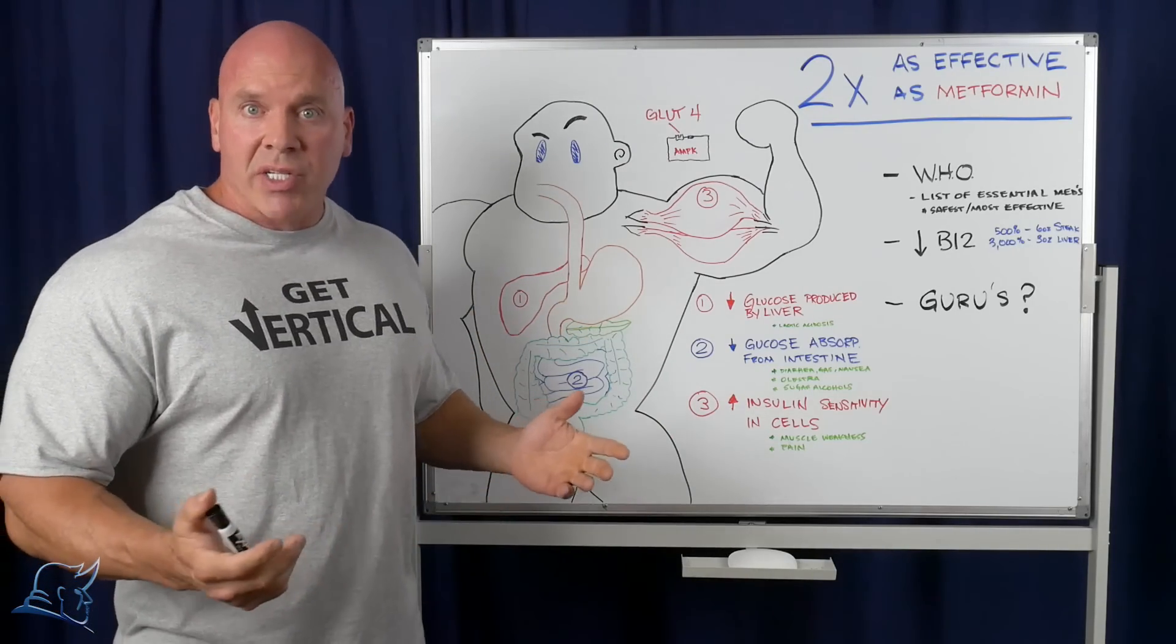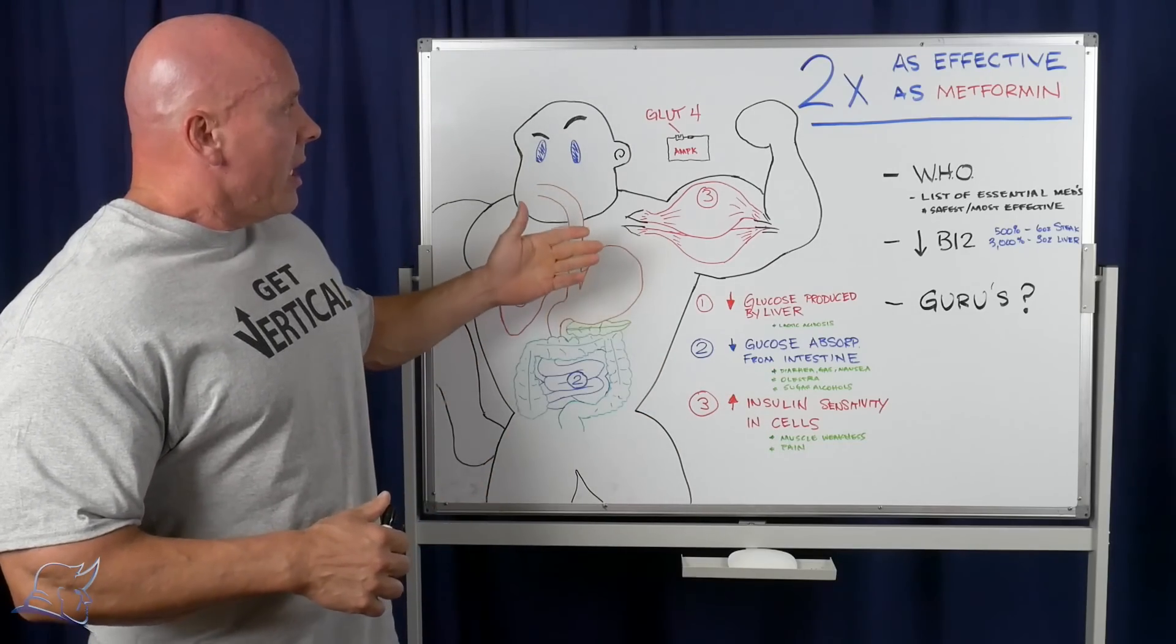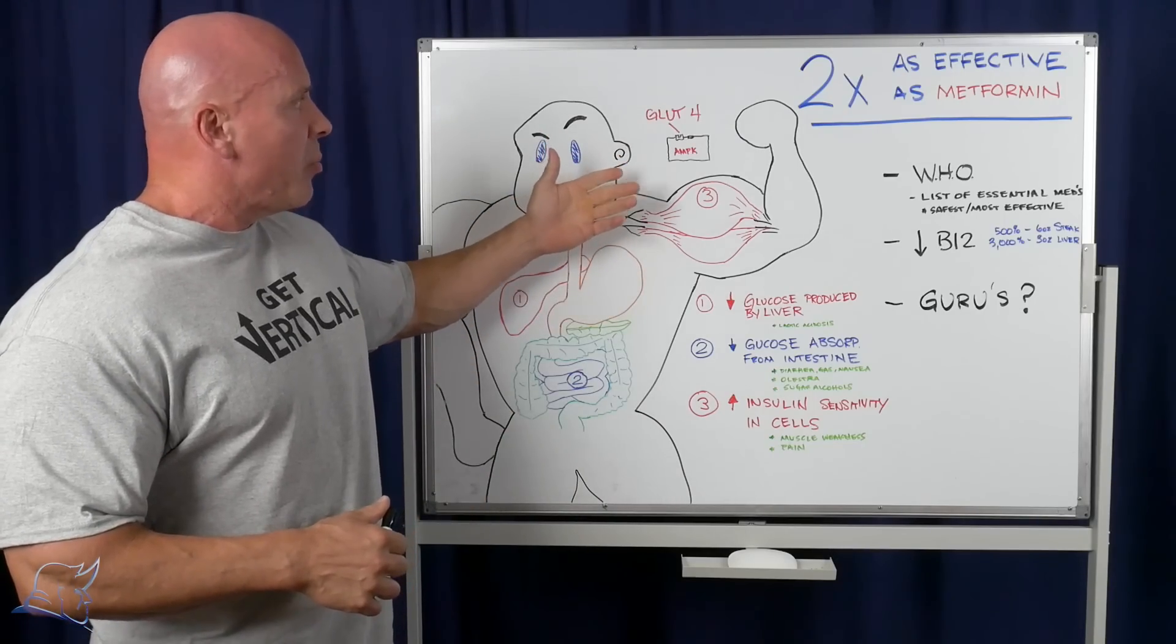Having said that, as diabetes medications go, this is probably one of the safest with the least side effects. In the muscles, in particular, the metformin increases AMPK, which increases the number of GLUT4 receptors.